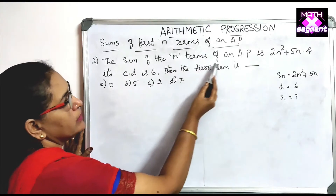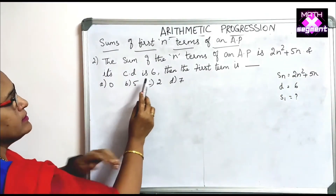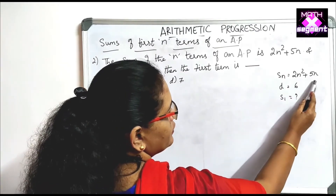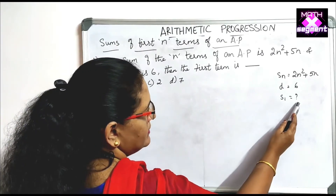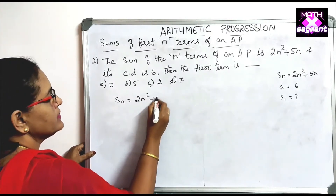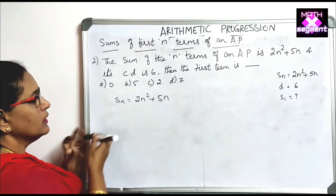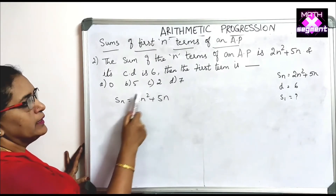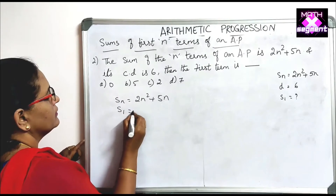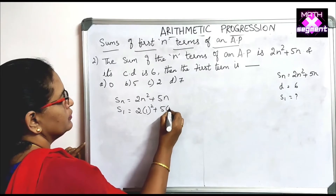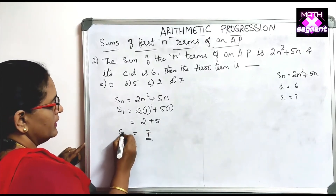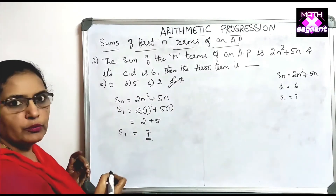The sum of N terms of an AP is given as SN equals 2N squared plus 5N, and the common difference is 6. Find the first term. Note that D is given just to confuse — we only need to find S1. Substituting N equals 1: S1 equals 2 times 1 squared plus 5 times 1, which is 2 plus 5 equals 7. So the first term is 7, and option D is correct.